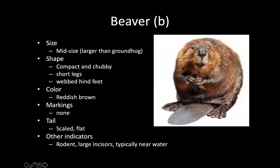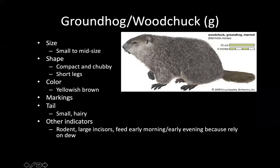Beavers are larger than groundhogs — compact and chubby with short webbed hind feet, typically reddish brown in color. The telltale sign is that scaly flat paddle of a tail. They're found near water and we don't have a lot of beaver photos. More commonly we see groundhogs or woodchucks, which are the same thing. They look similar to beavers but are typically smaller, have non-webbed legs, and have a hairy tail instead of a flat scaly one. Groundhogs tend to be more yellowish-brown or gray and can also be found away from water.